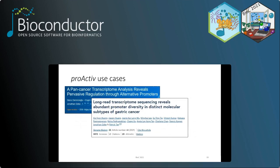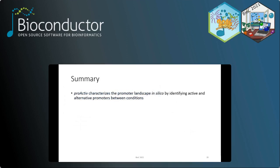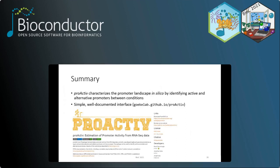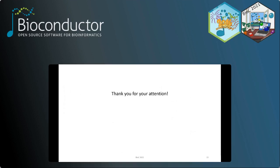In summary, ProActive characterizes the promoter landscape in silico by identifying active and alternative promoters between multiple conditions. ProActive comes with a simple, well-documented interface — you can find documentation and vignettes at our package webpage. Acknowledgements go to Dennis and Jonathan for their guidance on this work and to Dennis who wrote the ProActive package. I'd like to thank the organizers for organizing this event and letting us present our research.